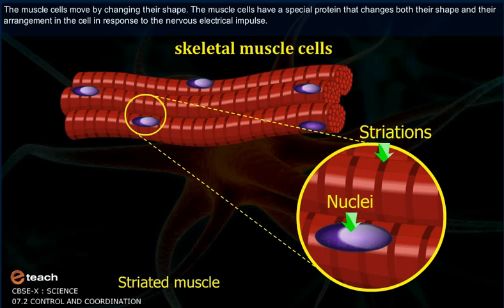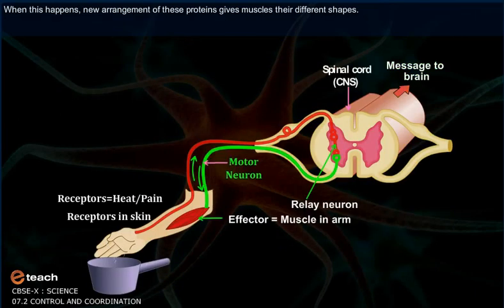When this happens, the new arrangement of these proteins gives the muscles their different shapes.